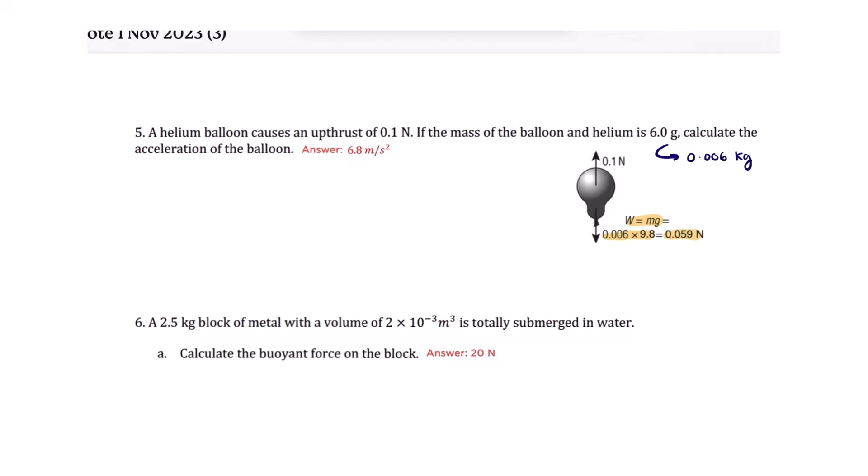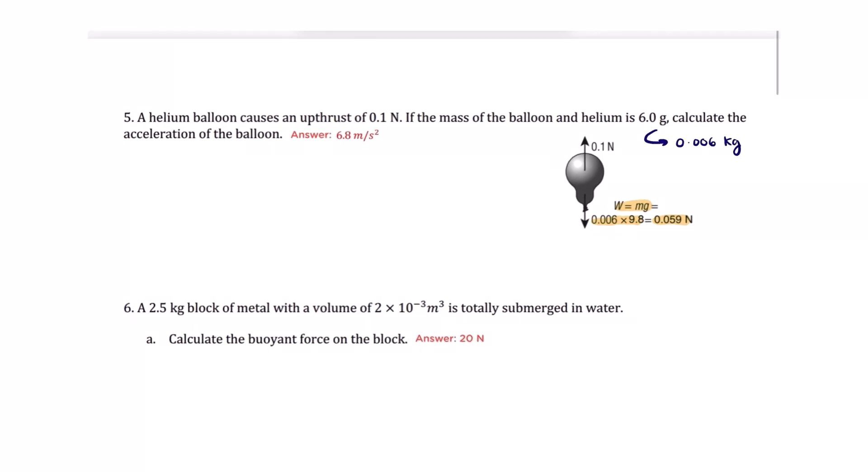It's asking us to calculate the acceleration of the balloon, so we would use Newton's second law, which is F net equals MA. When we say F net, we would look into the forces along the axis of the object's motion. So this balloon is moving in the vertical axis, so we would be looking into the forces along the vertical axis.